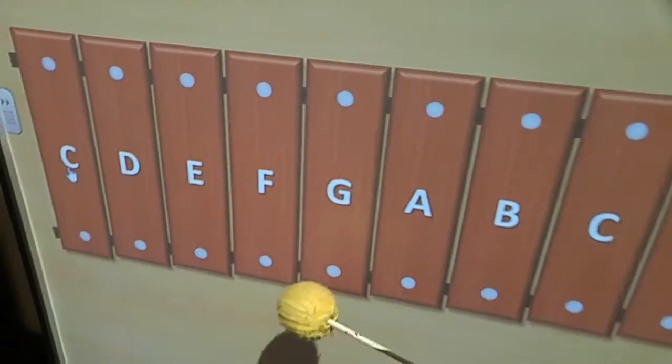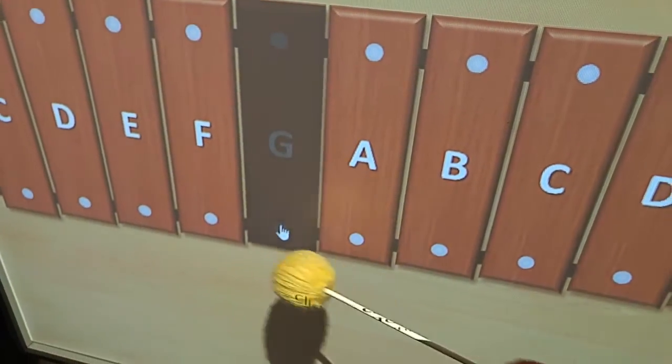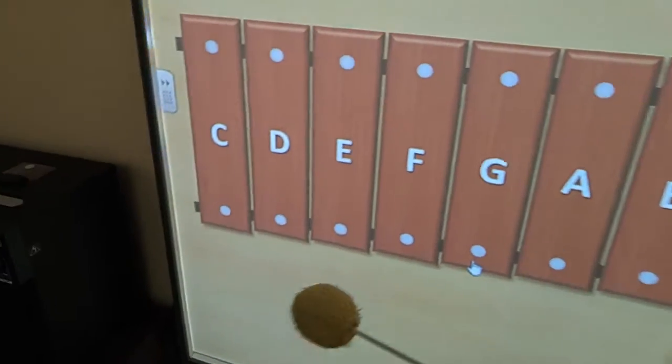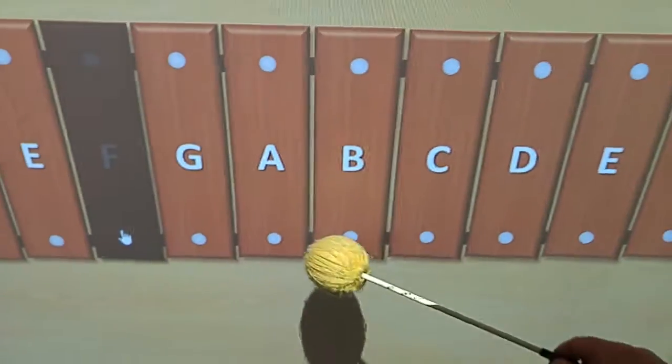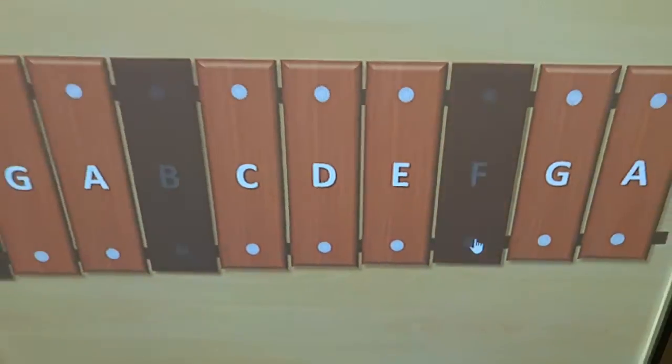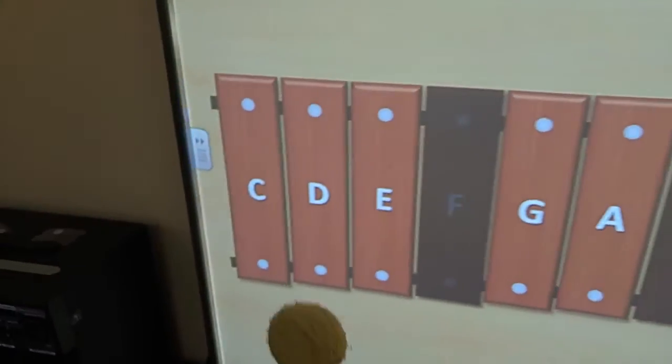You can also turn the keys off. If you want to do like a C pentatonic, you can take out the F's and the B's. There you go. They still play.